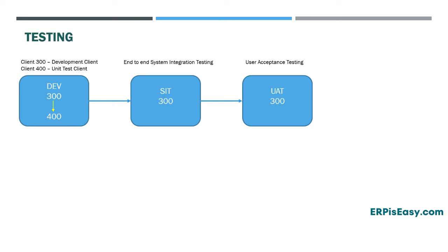Once the SIT is successful, the changes will be transported to the UAT system to perform user acceptance testing. This is where the end-users will test the business processes and configurations before giving the green light to go live. If the user finds a bug in the configuration, it is called a defect. The defect will be resolved by the consultant in the development system, and they will follow the same process up until the UAT.